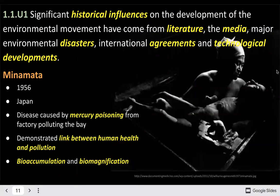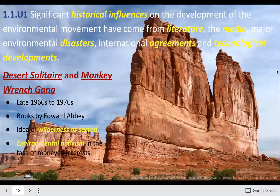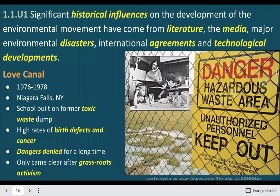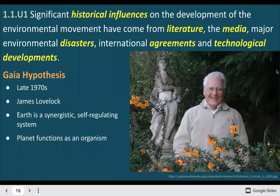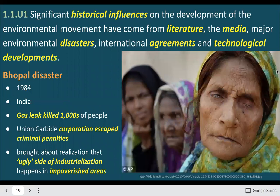On the IB exam, they might ask you to describe a few different historical influences on the environmental movement. For example, Silent Spring really brought people's awareness to the effect of DDT on the environment and the way DDT will biomagnify as it moves up the food chain and then affect predatory birds, especially bald eagles, peregrine falcons. Perhaps you've heard of Desert Solitaire, the inspiration for one of our field trips. I'll provide the link to this on the website so you can scroll through at your own desire.